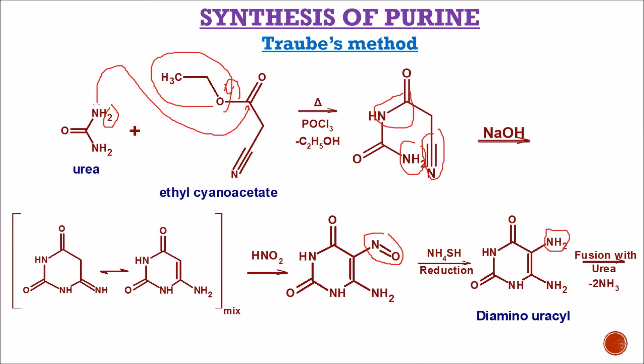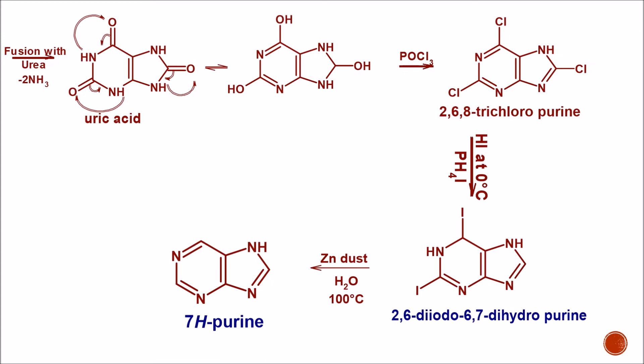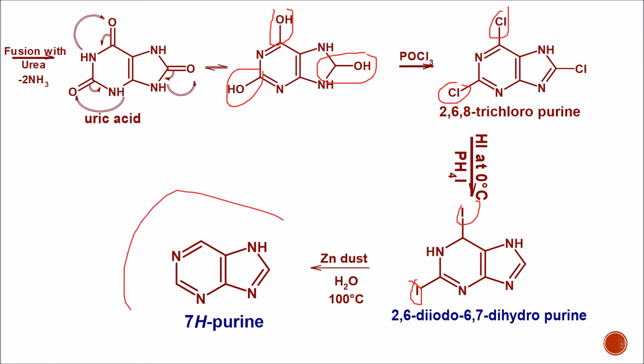After fusion with urea, this structure forms another ring structure — uric acid is formed. Uric acid continuously tautomerizes to form three hydroxyl groups. After tautomerization, it will have three hydroxyl groups, and after reaction in the presence of POCl3, all three hydroxyl groups are converted into Cl groups, so 2,6,8-trichloropurine is formed. In the presence of HI at a minimum temperature of 0°C, the second and sixth chlorine groups are replaced by iodine groups, forming 2,6-diiodo-6,7-dihydropurine. In the presence of zinc dust and H2O at higher temperature, iodine is liberated and the final purine structure is formed.